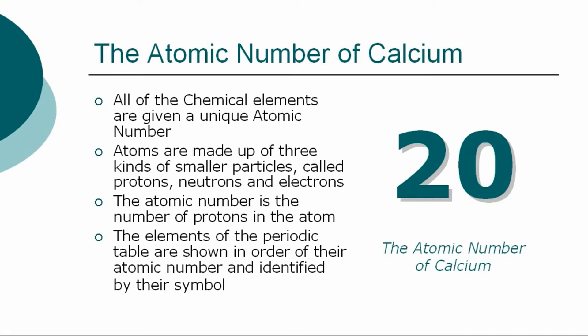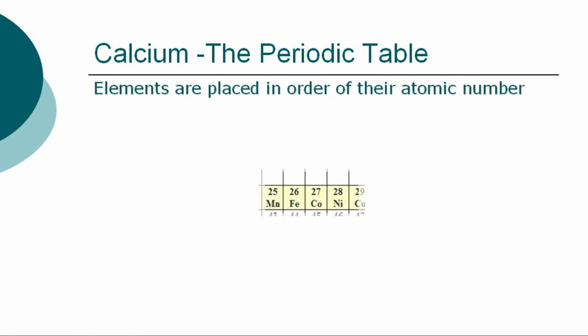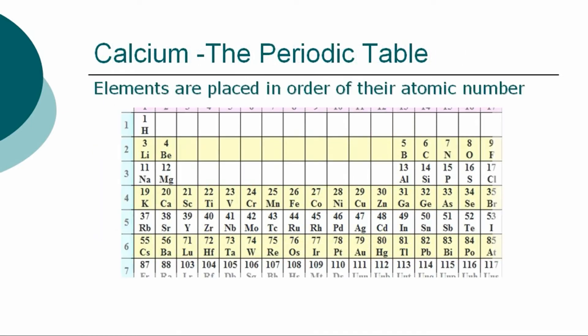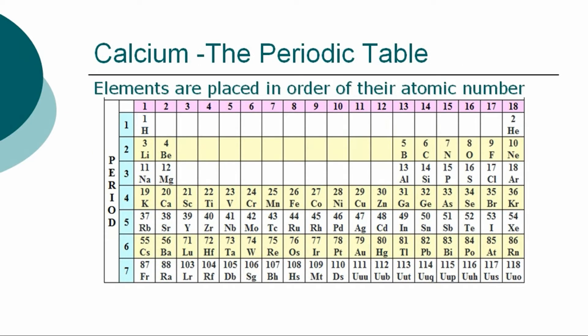The chemical elements of the periodic table are shown in order of atomic number and identified by their symbol. The periodic table is a chart showing the symbols and the atomic numbers of all known elements, such as calcium, in one large grid. The chemical elements are placed in order of their atomic numbers, which increase as you move across a row, called a group, or down a column, called a period.